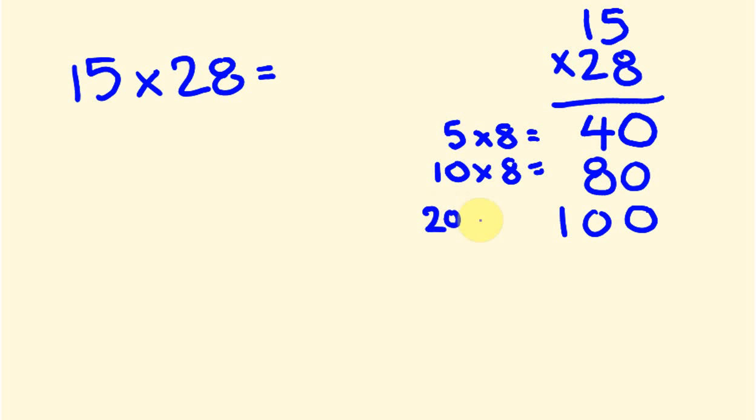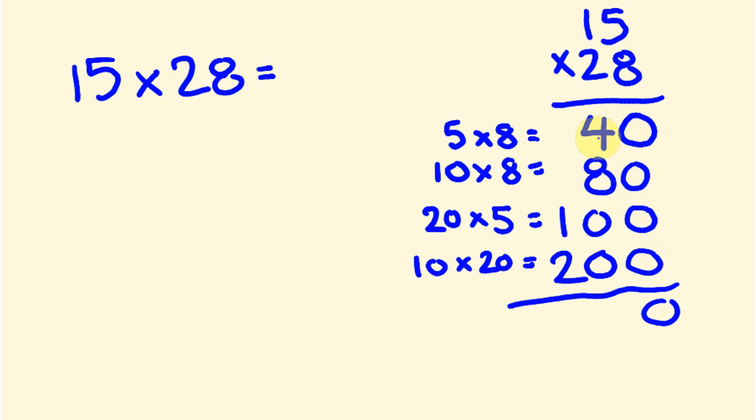And then we also do 10 times 20, which is 200. Then we'd add all these together: 40 plus 80 is 120, plus 100 is 220, plus 200 is 420.